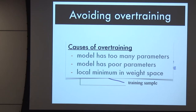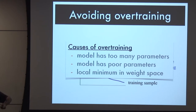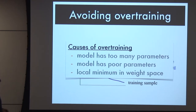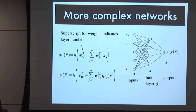Why do you get overtraining? Sometimes your model has too many parameters - say you have 1,000 data points and 5,000 parameters. The model is really flexible and can accommodate the detail of statistical fluctuations in your training sample. Or maybe your model has poorly chosen parameters, or you got stuck in a local minimum in your weight space.